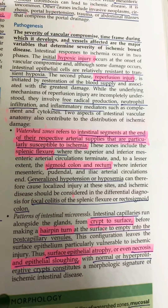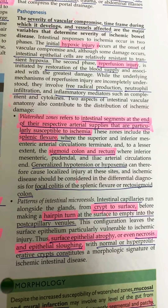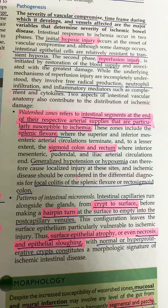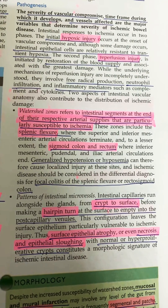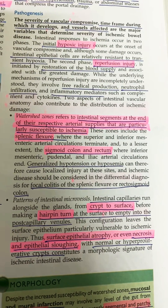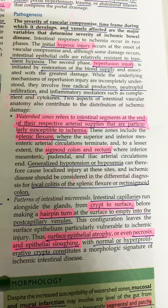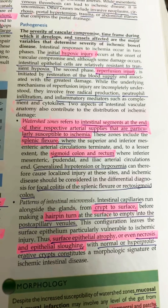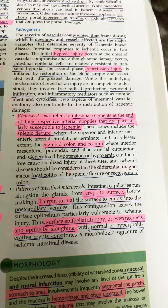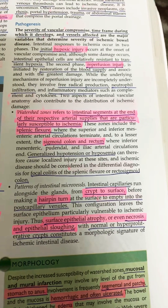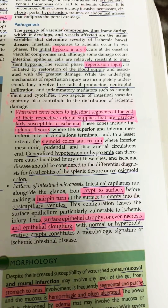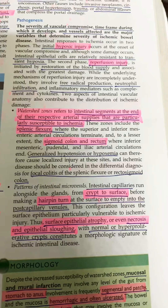There are two important aspects of intestinal vascular anatomy: watershed zones and the pattern of intestinal microvasculature. In watershed zones, the splenic flexure and the sigmoid colon and rectum are at the end of their respective arterial supplies, making them particularly susceptible to ischemia. Regarding microvasculature, intestinal capillaries make a hairpin turn at the surface to empty into postcapillary venules. These capillaries run from crypt to surface, and whenever surface atrophy, necrosis, or sloughing occurs, ischemic wall disease results.